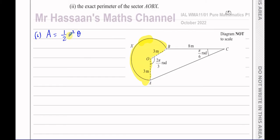We should know from our understanding of radian measure that the area of a sector is given by ½R²θ, where θ is in radians. This formula isn't given in the formula book so we should know it. We want to find the area of this major sector, so we need to know the angle subtended by the major sector.